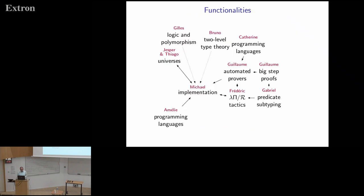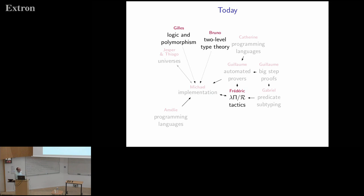Rather than speaking about specific systems, we'll abstract to functionalities. For example, how to encode logic and polymorphism will be covered by Gilles in the next talk; Jasper and Thiago will speak about the encoding of universes, which appears not just in Agda but also in Coq and Lean; and Michelle will speak about the implementation of a type checker for Dedukti. Today we'll cover these three things, and tomorrow you'll have more talks about other points.